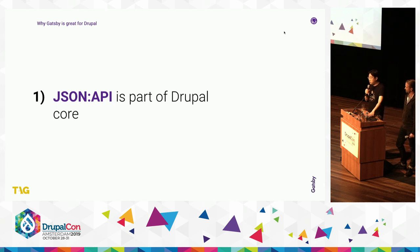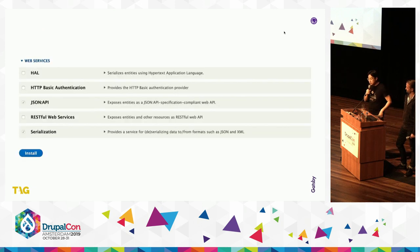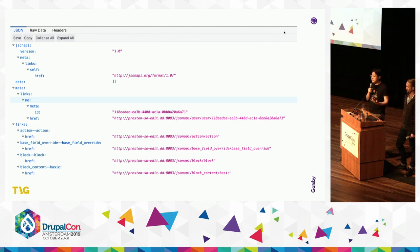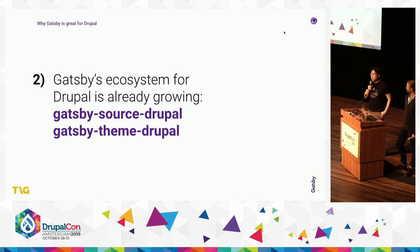Why are Decoupled Drupal and Gatsby so good for each other? First of all, JSON API is part of Drupal Core, which means that after just a few clicks you can install Drupal 8 and have Drupal as a headless CMS with the API enabled. It's part of Core, which makes it very easy to get started. As soon as you enable JSON API, you get a nice REST API you can read and write to. And I want to thank the entire API-first initiative team for making this module possible in Drupal Core.